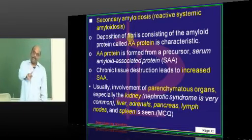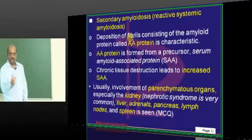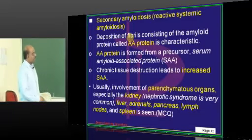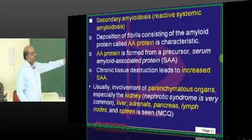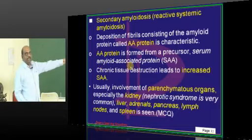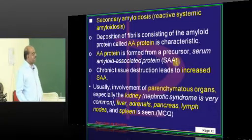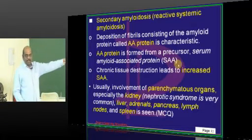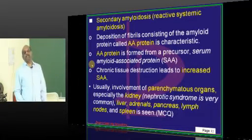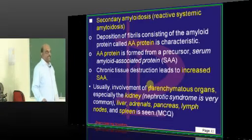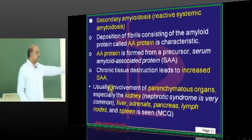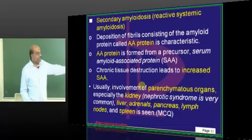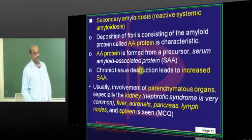In secondary amyloidosis, the amyloid type is AA, not AL. There is a precursor protein called serum amyloid-associated protein (SAA), from which AA is produced. Any chronic tissue destruction or chronic inflammation will increase the formation of SAA, which is the precursor for AA protein.